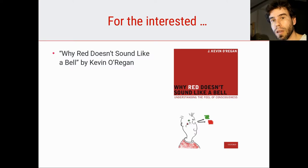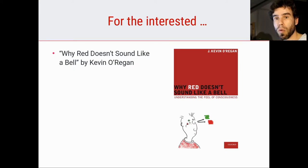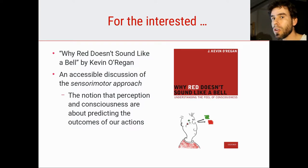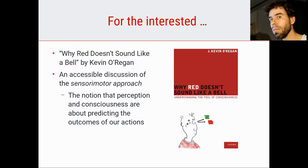I also like to recommend a more accessible book. In this case, I would like to recommend "Why Red Doesn't Sound Like a Bell" — there it is — written by Kevin O'Regan, a recently retired psychologist and professor from Paris. In this book, he describes his sensory motor approach. What is the sensory motor approach? It's a little bit abstract, so if you really want to understand what it means, I recommend that you read the book. Basically, it refers to the idea that perception and consciousness are all about predicting the outcomes of our actions — so that when we see something, what we're actually doing is making some kind of inference of what would happen if we act upon the thing that we see.